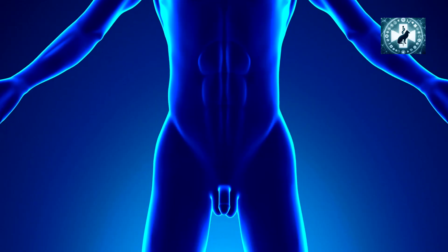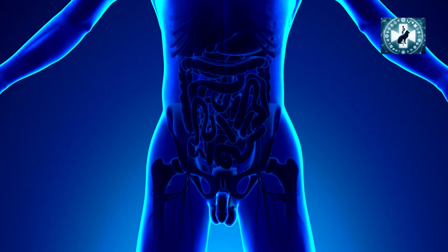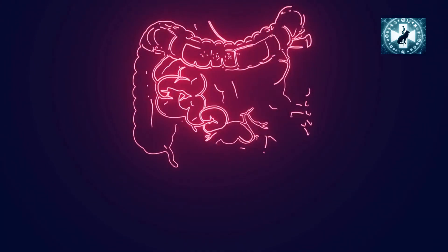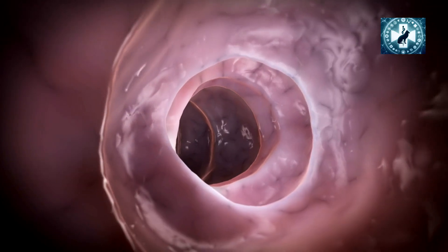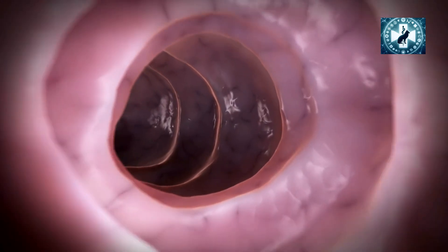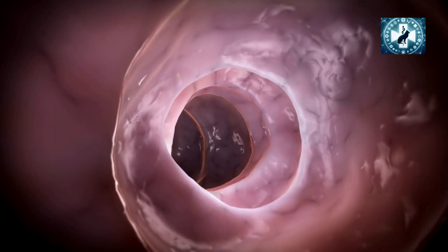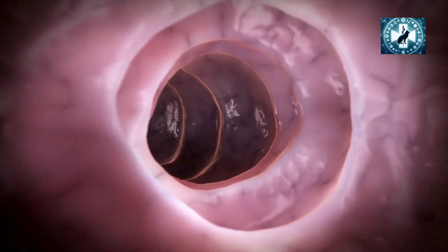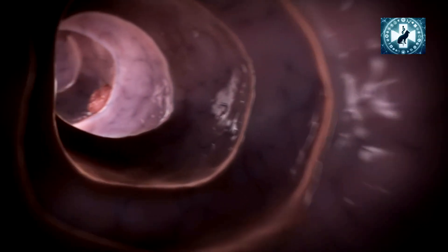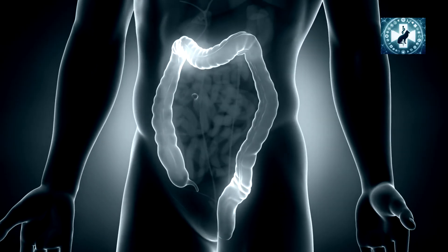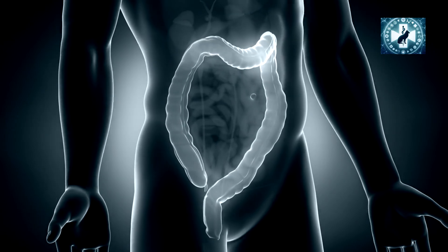Before we talk about what colon cancer is, we need to know the anatomy of the colon and where it is located in the body. The colon, also known as the large intestine, is a vital part of the digestive system. It plays a key role in absorbing water and electrolytes from digested food and processing waste material. It is a muscular structure about five feet long in adults, and it forms an inverted U-shape that frames the small intestine, divided into several sections.